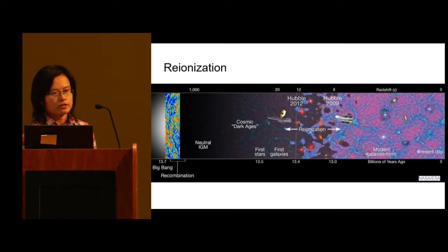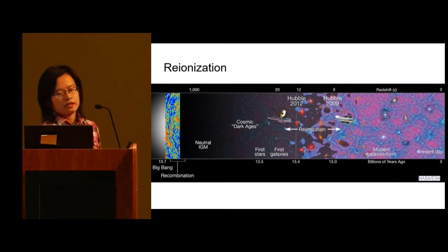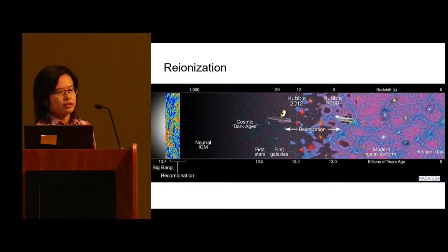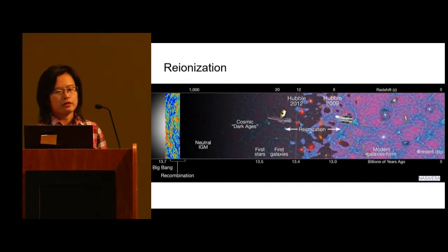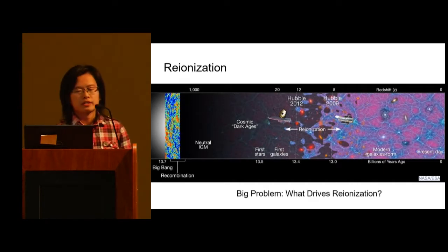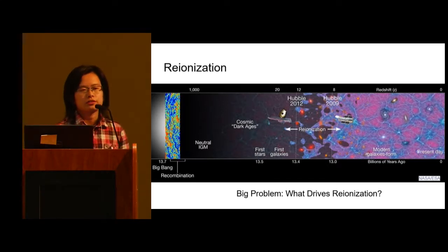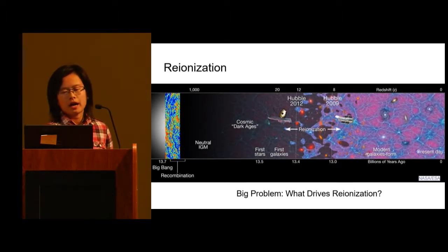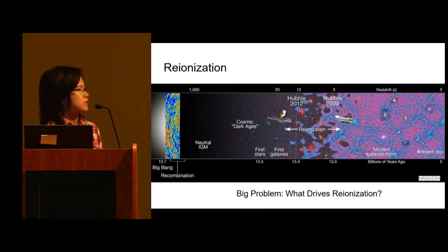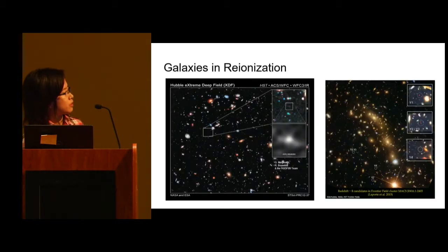This allows us to detect the most distant objects because they ionize the gas, which is otherwise neutral and absorbs starlight. There are a lot of questions about this period. One of the biggest problems is what drives this reionization? One mainstream answer to this question is galaxies.